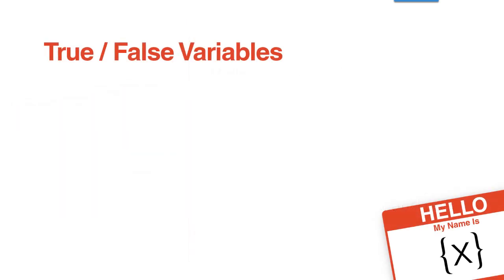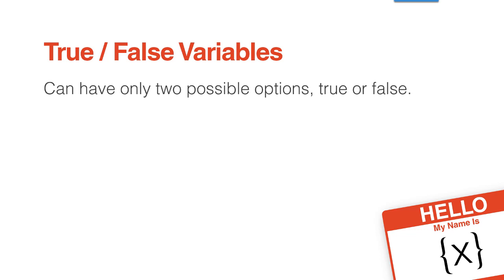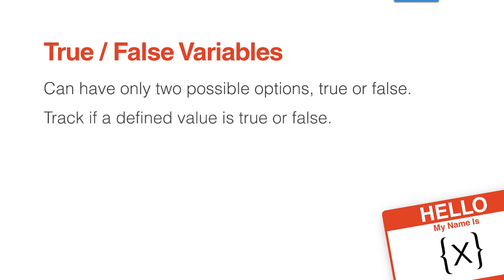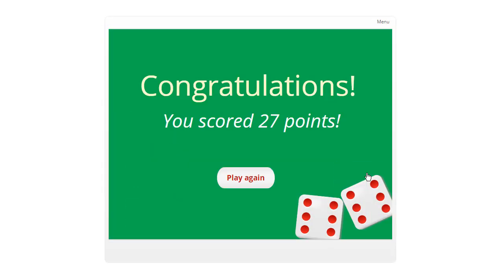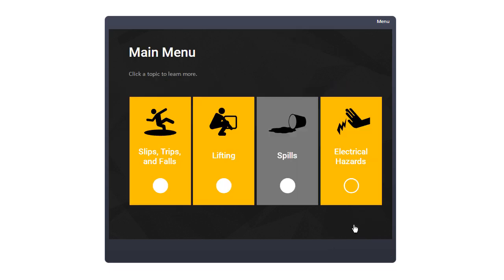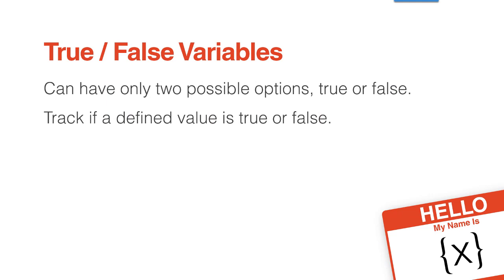True-false variables are for situations where there are only two options — true, false, yes, no, right, wrong, black, white. You set up some value and then the variable keeps track of whether that value is true or false. For example: you live in California, true or false. You have earned 24 points, true or false. You have visited this page, true or false. In each situation, there are only two possible options, true or false.